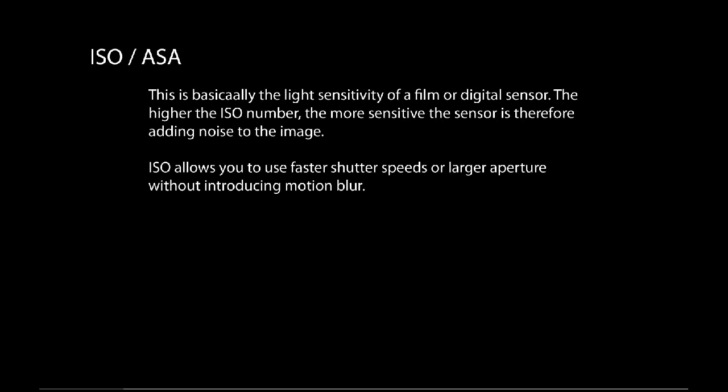The last thing we're going to talk about is the ISO — some people call it the ASA, which is the older film term. Basically it's the light sensitivity of your film or your sensor. If you have a high ISO, your image is going to be more sensitive to light, therefore adding a lot of noise to the image. Let me show you an example of what noise is, because you need to understand what noise is before you can understand what I'm talking about.